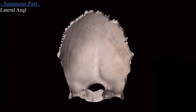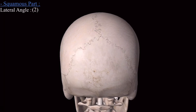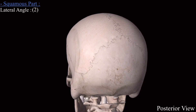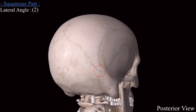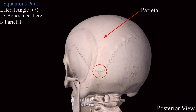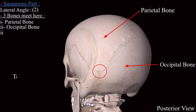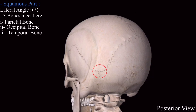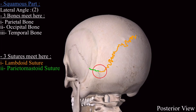The lateral angle is the meeting point of three bones: the parietal bone, the occipital bone, and the temporal bone. It is also the meeting point of three sutures: the lambdoid suture, the parietomastoid suture, and the occipitomastoid suture. This point is also called the asterion.